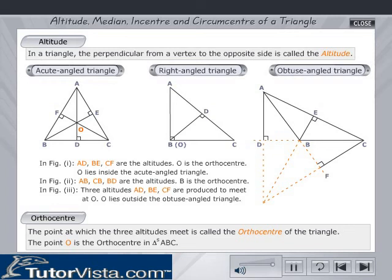Observe figure 3. The altitude from B is easily obtained as BE. The altitudes from A and C are obtained by producing sides BC and AB up to points D and F respectively. The orthocentre is obtained by producing the altitudes AD, BE and CF until they intersect at O. Notice that O lies outside the obtuse angled triangle.